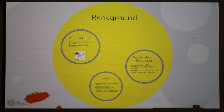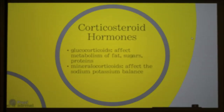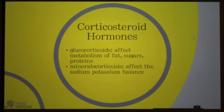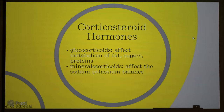A little bit of background. The adrenal glands, which are cranial to the kidneys, produce corticosteroid hormones. These hormones are the glucocorticoids, which affect the metabolism of fat, sugars, and proteins. Specifically in a fight-or-flight response, they're going to be ready to burn calories instead of store calories as fat. The mineralocorticoids affect the sodium-potassium balance, and in a fight-or-flight response, the body is going to conserve sodium in case of a massive blood loss, and therefore potassium is going to be excreted.